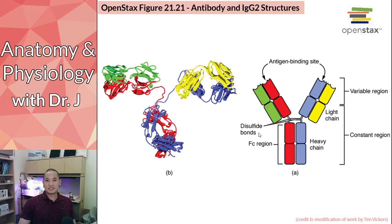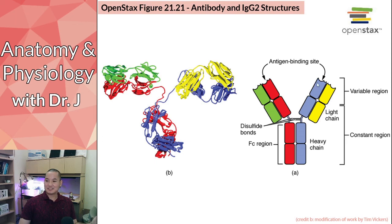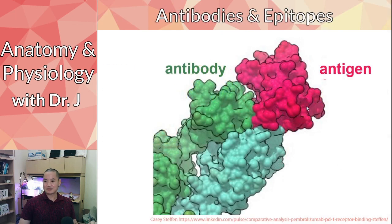The constant region is always the same across different types of antibodies, but the variable region is what allows you to generate different antibodies against different antigens. By changing the genetic sequence — from gene to mRNA to protein — you can generate a very large number of combinations, producing a huge variety of different antibodies.